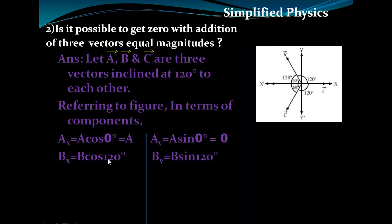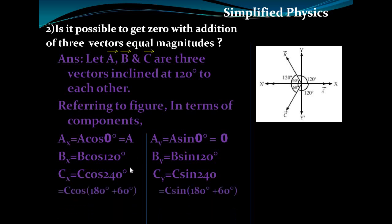For vector B, which is inclined at 120° with the x-axis, theta equals 120°, and B_y equals B sin(120°). For vector C, the angle is 120° + 120° = 240°, so C_x equals C cos(240°). We can also consider the negative direction as −120°, but here we take the anticlockwise direction, so 240°.